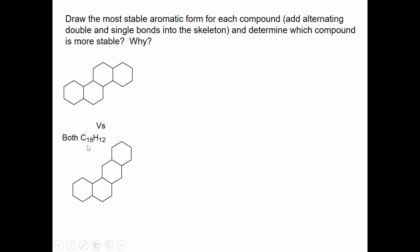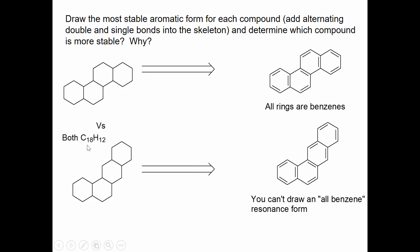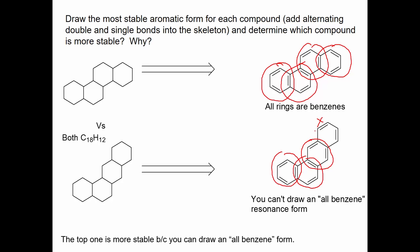Here's a problem for you. Put in the double bonds for these benzene rings so that you have the maximum number of benzene rings. Draw the most stable aromatic form you can draw for each compound. In the top one, we can write an all-benzene structure. If you look at benzene, benzene, benzene, benzene, benzene. In the bottom one, we cannot write an all-benzene structure, but we can get three out of four of the benzene rings as benzene rings. You see that we have three benzene rings, and the last one is not. The top one is more stable because you can draw an all-benzene ring form for that one. And that's a general consideration, or that's a general trend that the more benzene rings you can write, the more stable it is.